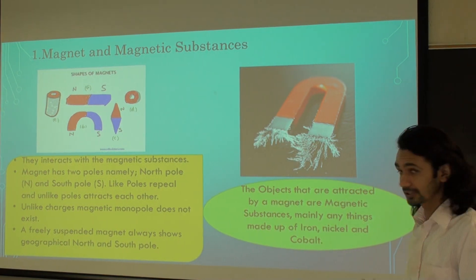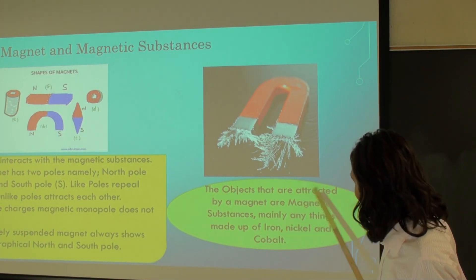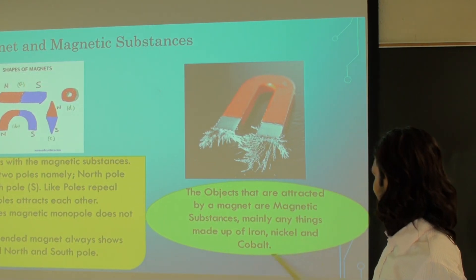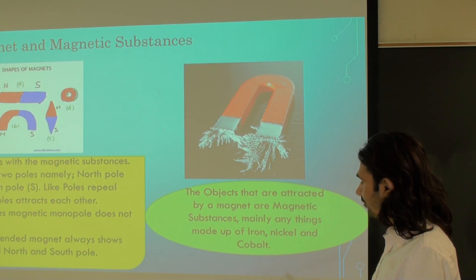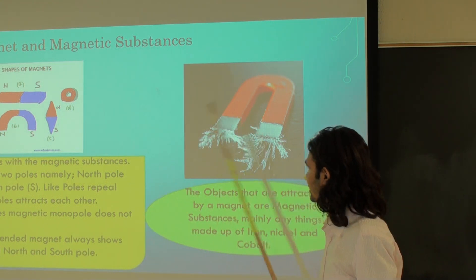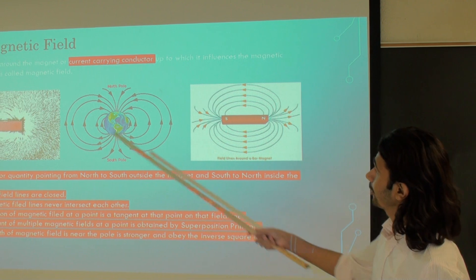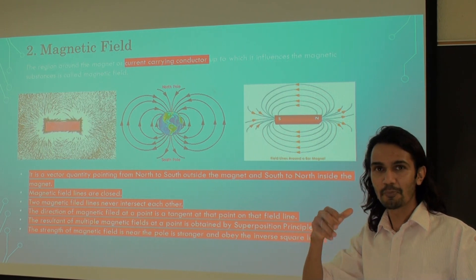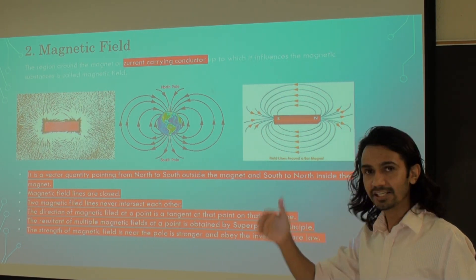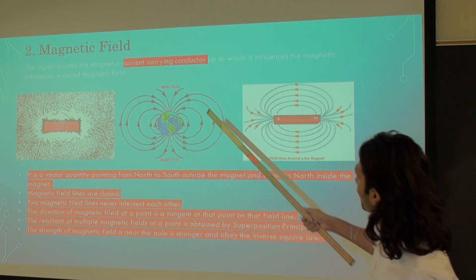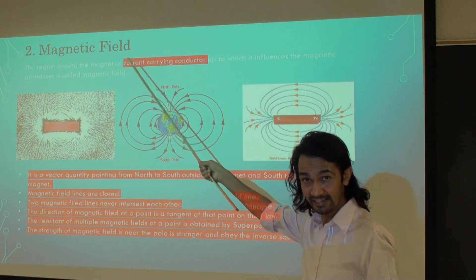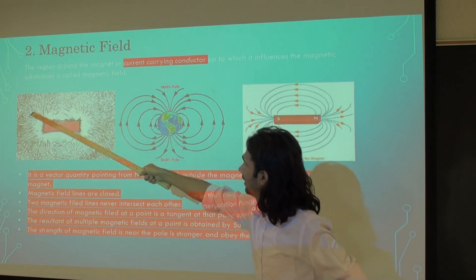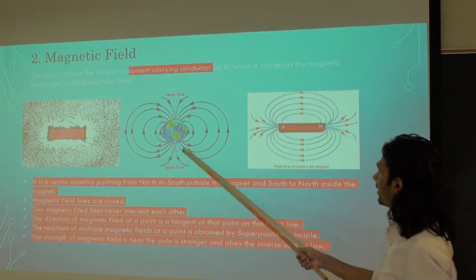Let's talk about some magnetic substances. The objects that are attracted by magnets are called magnetic substances, such as iron, nickel, and cobalt. Materials made up of these substances are magnetic substances. Now let's talk about the magnetic field. Around a magnet there is a region up to which the magnet influences magnetic substances — that region we call the magnetic field. If we have a bar magnet and some iron dust, they will display a pattern like this.